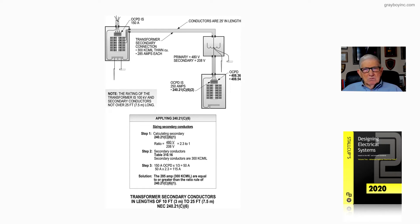You get the ratio. 480, 208, volts into 480. And then 480 is your primary, 208 volts your secondary. We have a 2.3 to 1 ratio.